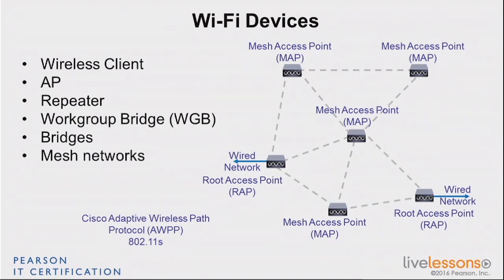The IEEE was also working on a protocol for mesh networks, which came out as 802.11s a few years ago. You may hear about 802.11s, but it's not as widespread as vendor proprietary protocols like AWPP. The reason is that 802.11s took about seven years in the making, during which vendors like Cisco built their own protocol, deployed their networks, and now have no real reason to undo that work to adopt a new protocol.